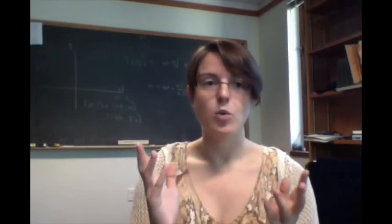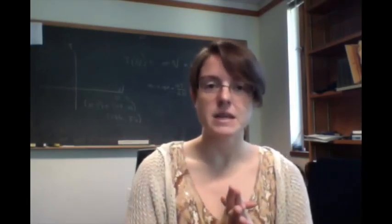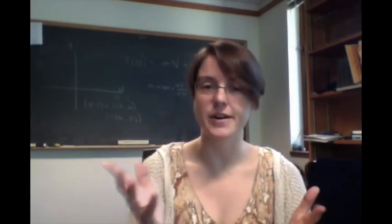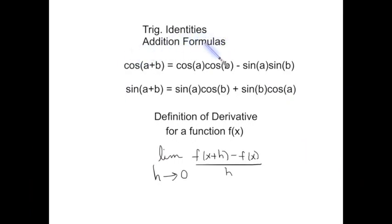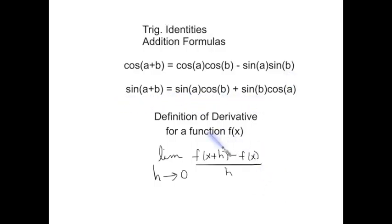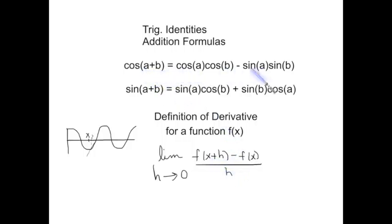Because the definition of derivative has limits in it, we're going to need to use some additional facts that we haven't seen before, that we're going to derive for ourselves. Here are some things we're going to need. Remember these trig identities called addition formulas. The cosine of (a + b) equals cosine(a)cosine(b) minus sine(a)sine(b). There's also a similar identity for sine of (a + b). We're also going to need the definition of derivative. For the cosine function, our f is going to be cosine, so we're going to have cosine of (x + h), where our a will be x and our b will be h.